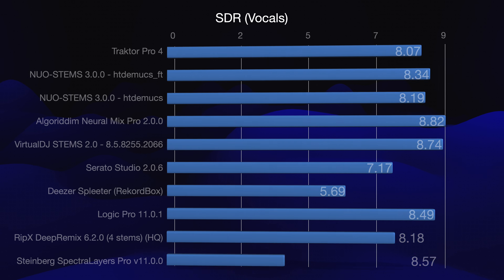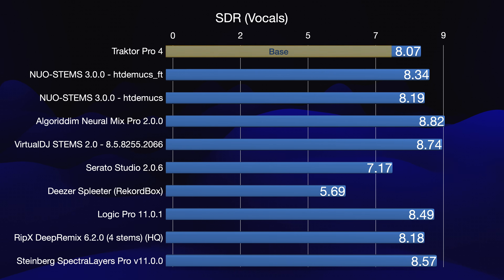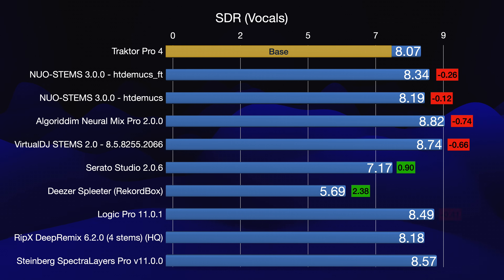Finally, the vocal stem — that's where Traktor seems to perform the worst. NoStems, Algorithm DJ Pro, and Virtual DJ all produce higher SDR scores, while Serato and Rekordbox come short of Traktor.